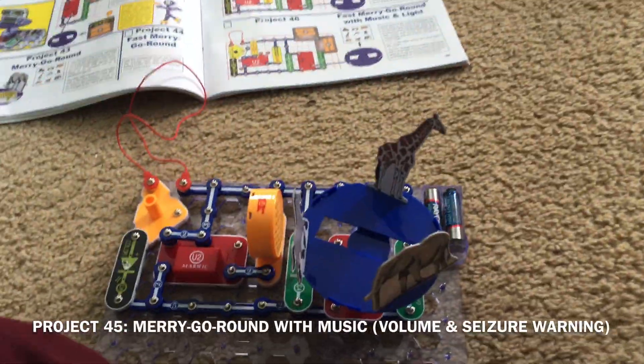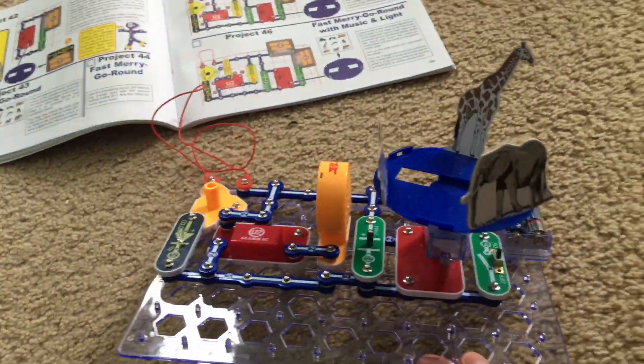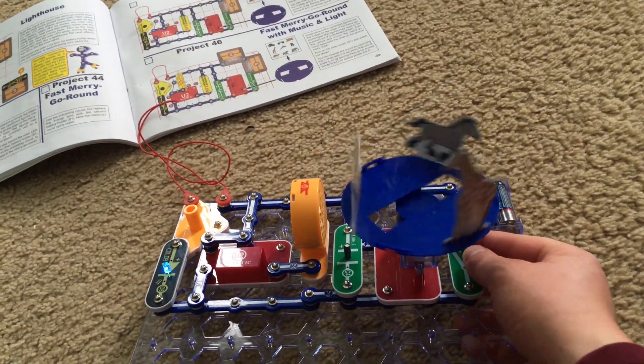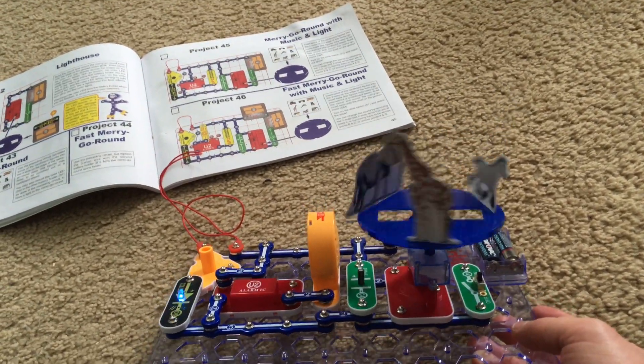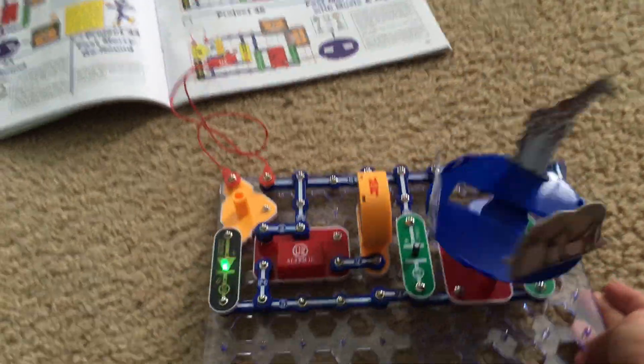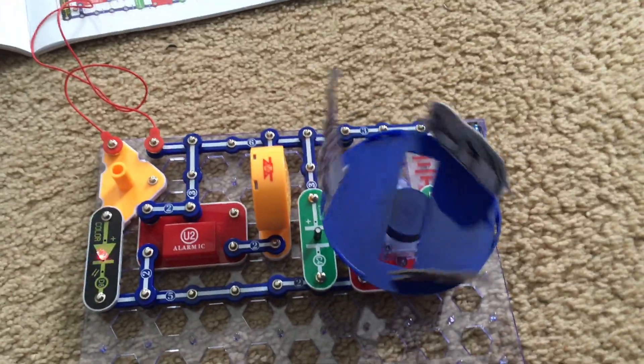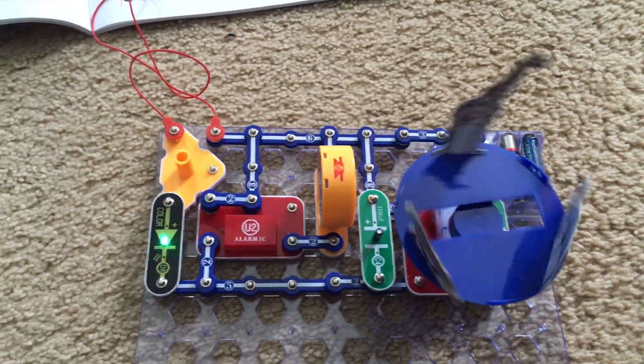This is a merry-go-round that has music and a color light too. I am going to turn on the slide switch. And now the merry-go-round spins. The color LED flashes and a siren sounds. It's not really music, but they say it is. The manual says it is. But you could pretend that the siren is music if you want to.